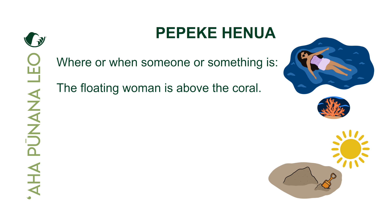We are going to translate from English into Hawaiian. The first thing we need to do is figure out what is the piko. The floating woman is above the coral — this woman is the piko, or the subject of the sentence. The second part of the sentence is the ave: above the coral — that's where this woman is located. Every pepekehenua begins with the word 'aia.' The word 'aia' is the po'o of this pepeke, and it's always po'o, piko, ave.